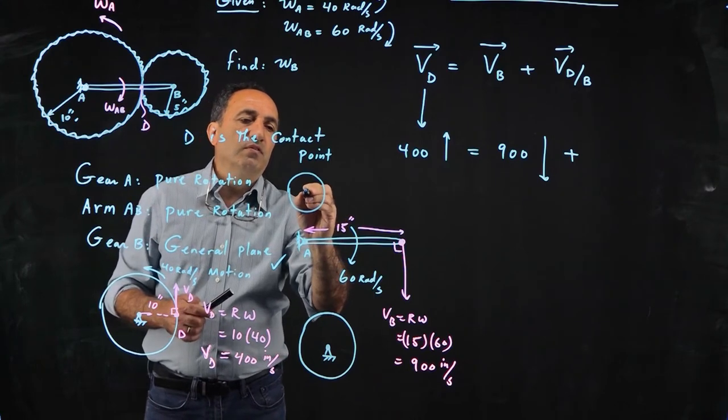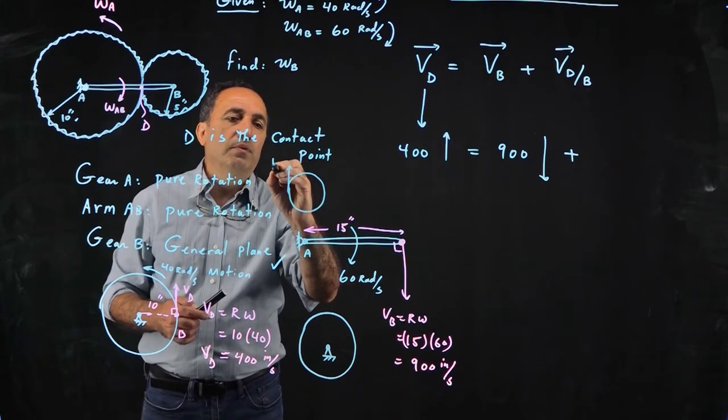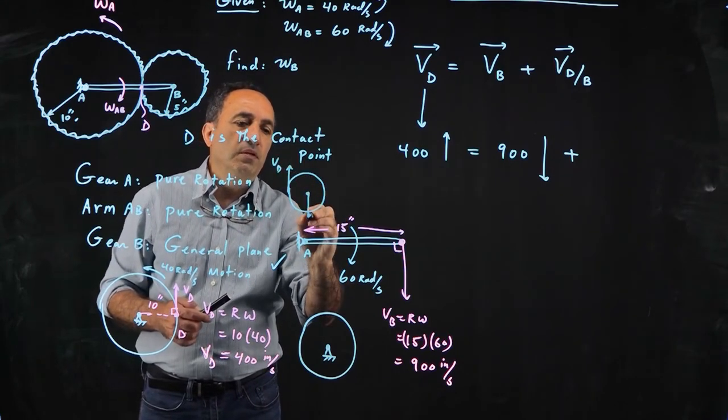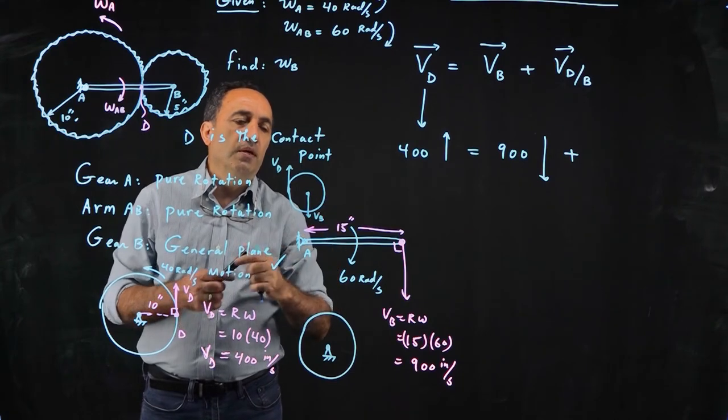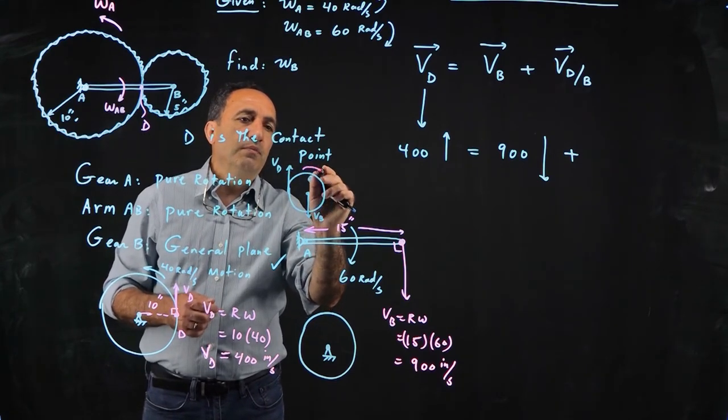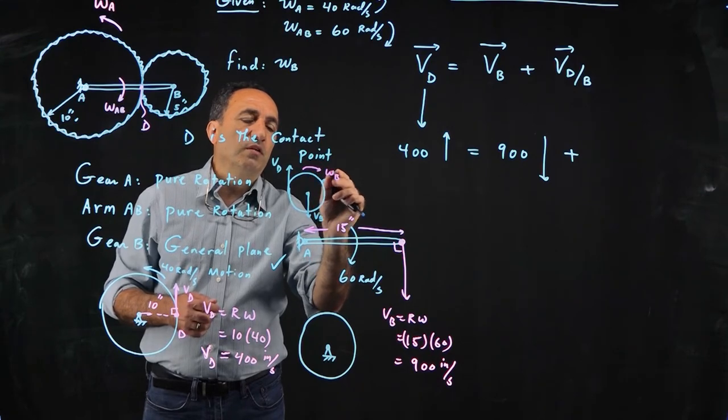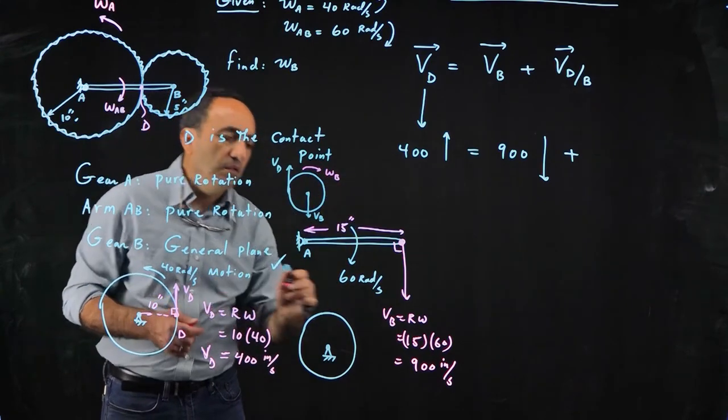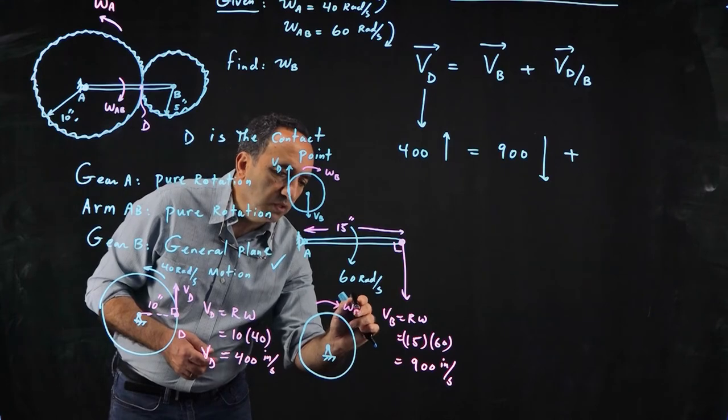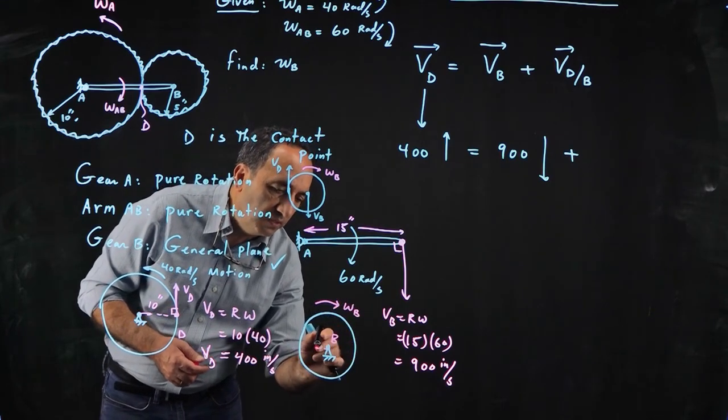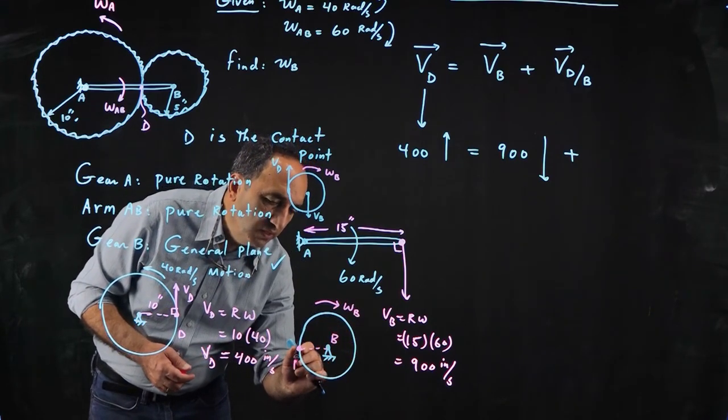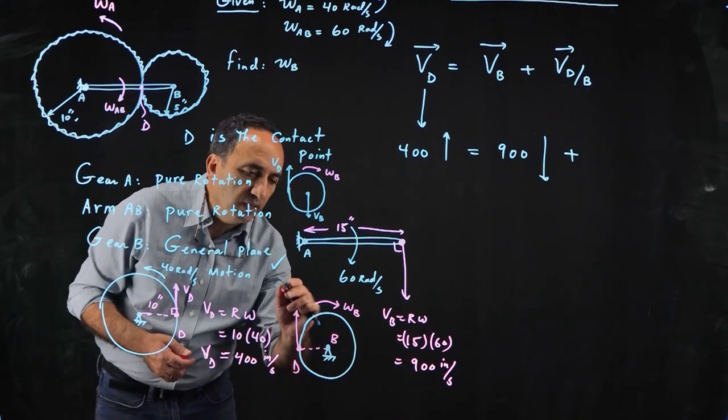Just looking at gear B again. Since velocity of D is up and velocity of B is down, 400 and 900, that implies that this gear must be rotating clockwise. So if you had this gear rotating clockwise, B was fixed, and you wanted to find velocity of D as if B was fixed, that would be V_D/B.